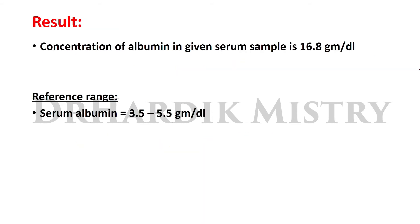So here is the result: the concentration of albumin in the given serum sample is 1.68 gram per dL. The reference range of serum albumin — that means the normal value of serum albumin — is 3.5 to 5.5 gram per dL.